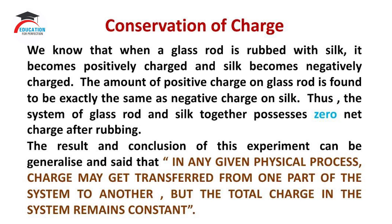When a glass rod is rubbed with silk, it becomes positively charged and the silk becomes negatively charged. The amount of positive charge on the glass rod is found to be exactly the same as the negative charge on silk. Thus, the system of glass rod and silk together possesses zero net charge after rubbing.